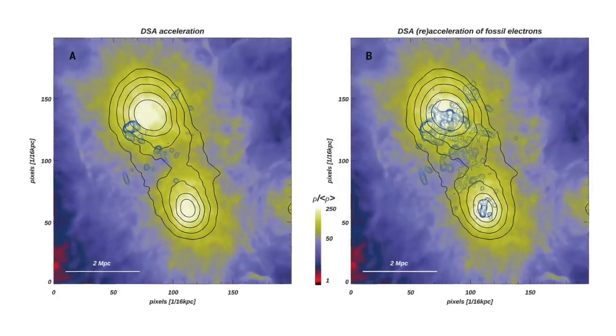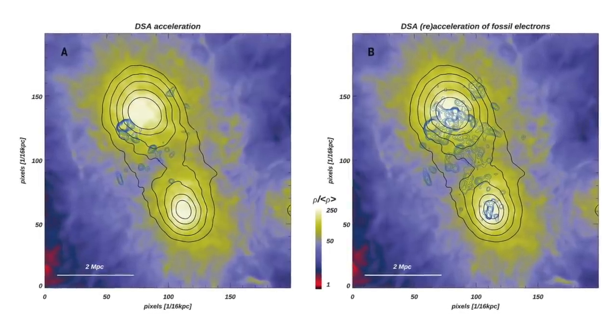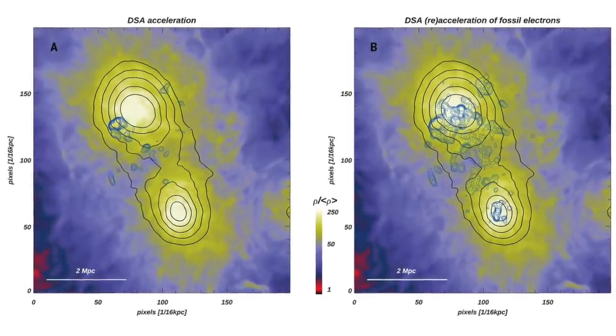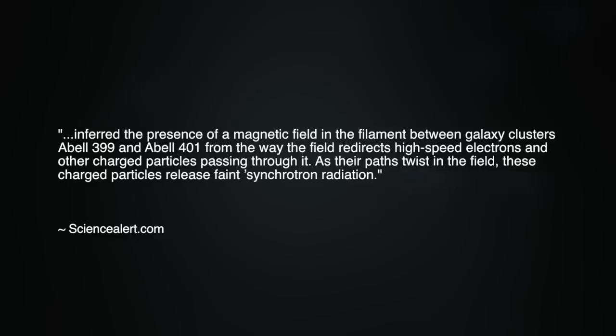In the aforementioned Quantum Magazine piece, the description of the radio-emitting magnetic filament inadvertently confirms the electrical interpretation. The article states that the scientists inferred the presence of a magnetic field in the filament between galaxy clusters Abel 399 and Abel 401 from the way the field redirects high-speed electrons and other charged particles passing through. As their paths twist in the field, these charged particles release faint synchrotron radiation.